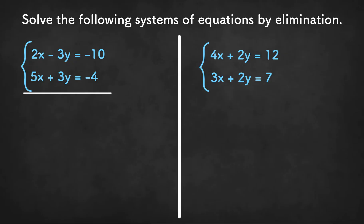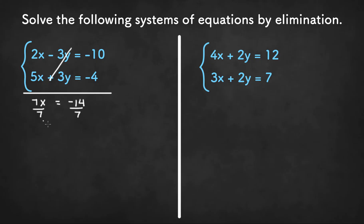So we have 2x and 5x, and we can combine them to get 7x. We have negative 3y plus 3y, or 0y, so we don't have to write anything. We have negative 10 plus negative 4, or negative 10 minus 4, which is negative 14. Once we divide both sides by 7, we are left with x equals negative 14 divided by 7, or negative 2. That should be the solution for the x value.